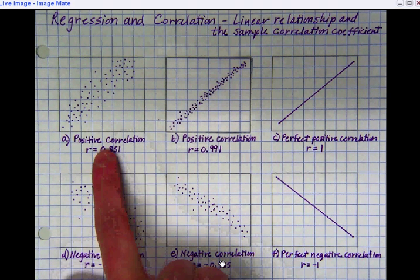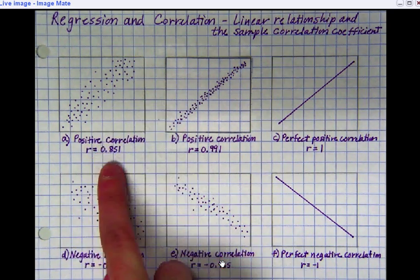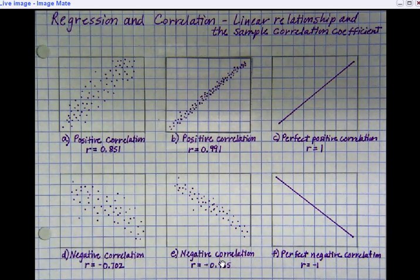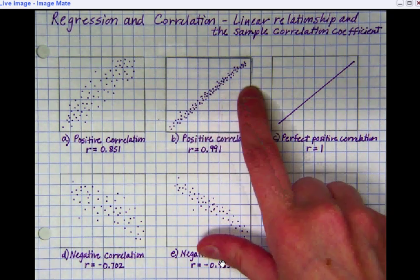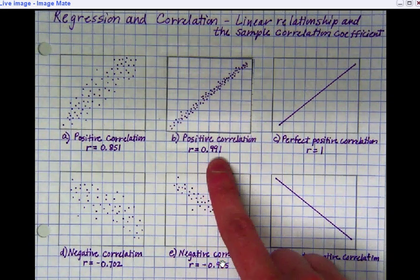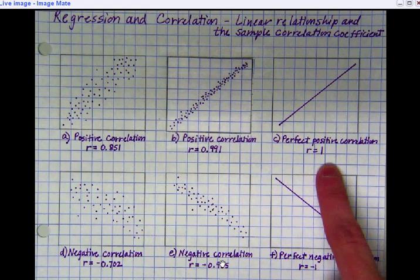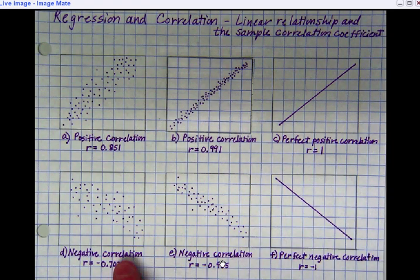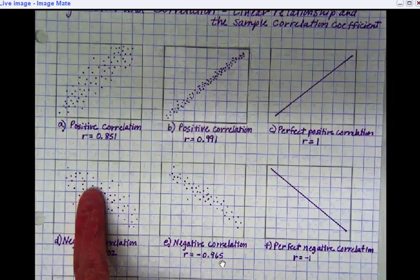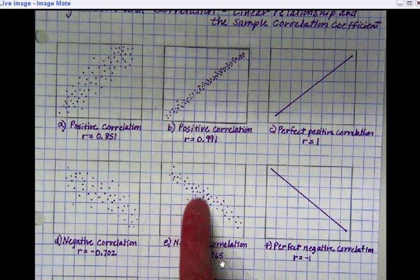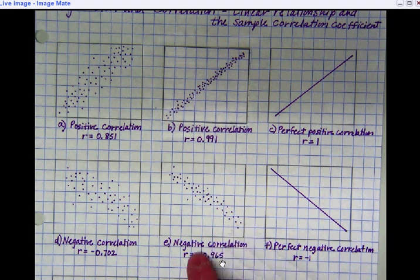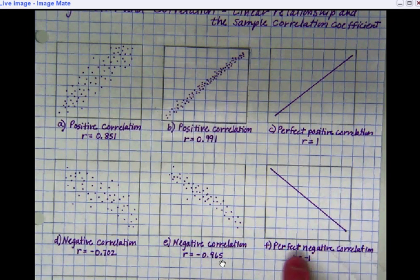This is a positive correlation, r is 0.851. A positive correlation even closer, r is getting closer to one. And the perfect r is equal to one. For the negative, this is a negative correlation, angling this way. A negative correlation getting closer to one. Observe the perfect negative correlation, r is negative one.